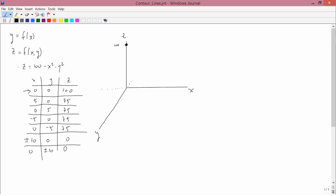The next four points here have a height of 75. So let's mark that as 75. The first one is five units on the x-axis. One, two, three, four, five. No units on the y-axis and 75 units up. So we mark that like this.